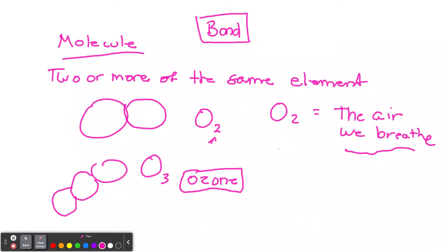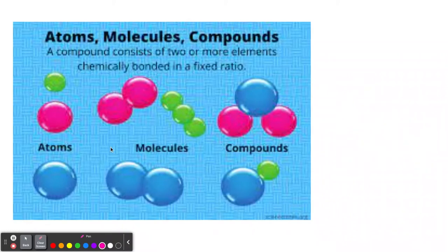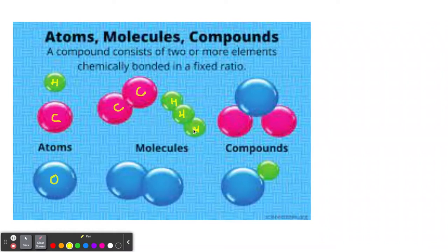A compound is two or more of different elements. Very simple. So if we look at this picture, we have different atoms - maybe this is oxygen, maybe this is carbon, and maybe this is hydrogen. If we put two carbons together, we have a molecule - C2. Three hydrogens together, we have a molecule - H3. These are molecules because they're the same elements. But if you put different elements together, then it's a compound.